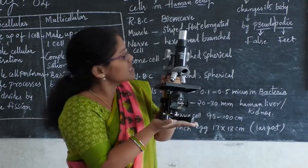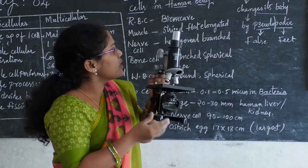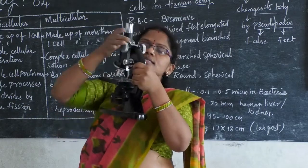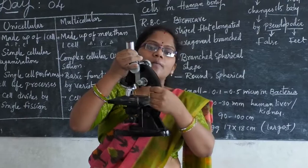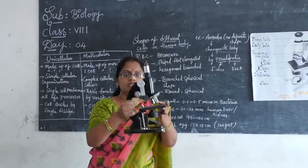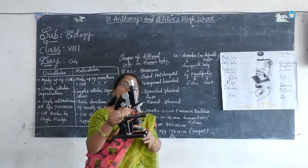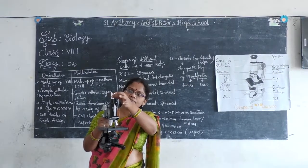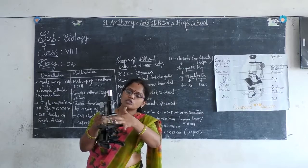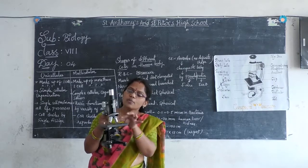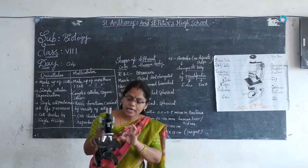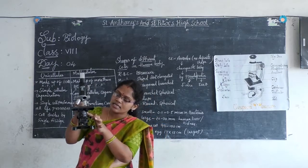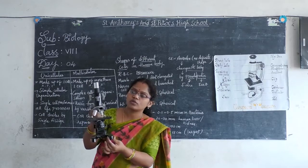This is called the base. This is called the foot. And this is called the arm — because when holding the microscope, I hold it with the help of the arm. So to recap: eyepiece, body tube, nose piece, revolving nose piece, stage, clips — the stage is used for keeping the slide — condenser, reflector, base, and foot.